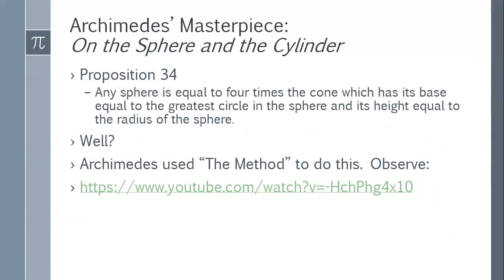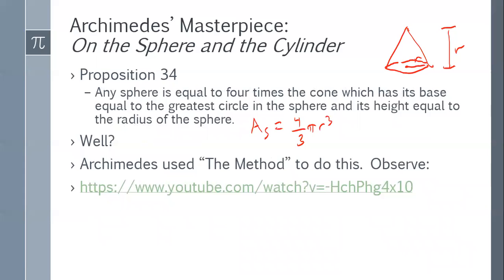Proposition 34 states: 'Any sphere is equal to four times the cone which has its base equal to the greatest circle in the sphere and its height equal to the radius of the sphere.' Archimedes is saying the volume of the sphere equals four times the volume of a cone with radius r and height r. That cone has volume (1/3)πr³, so four times it gives (4/3)πr³.